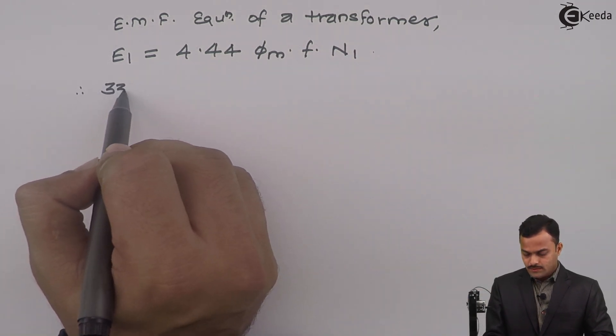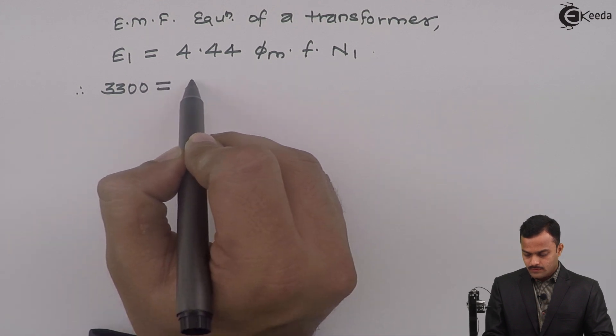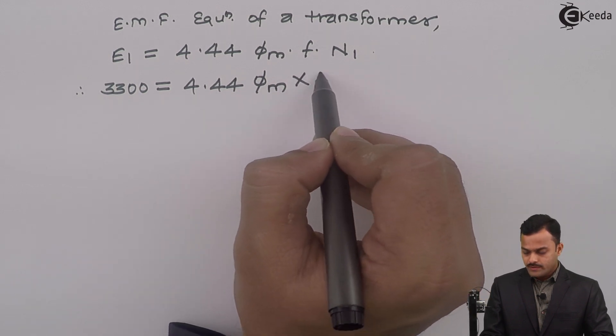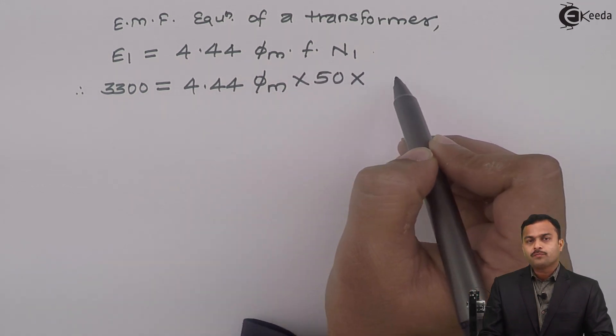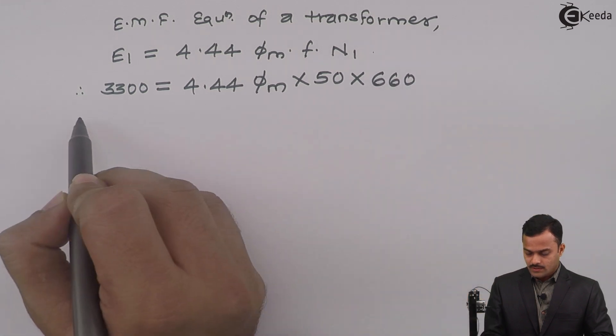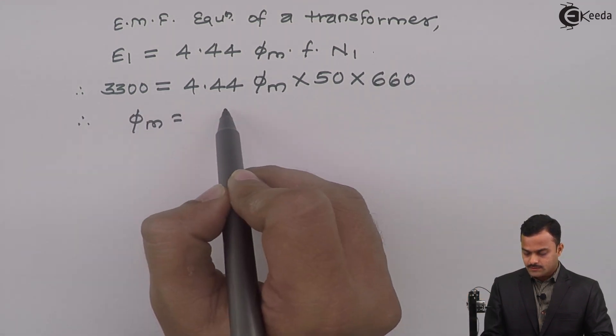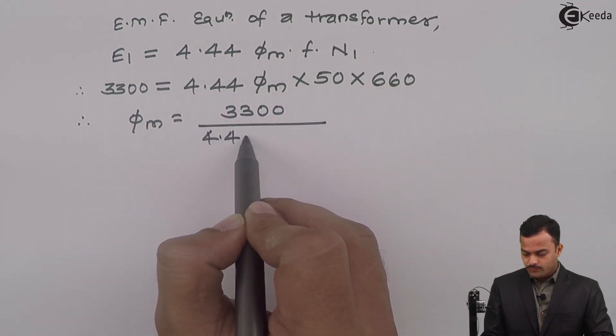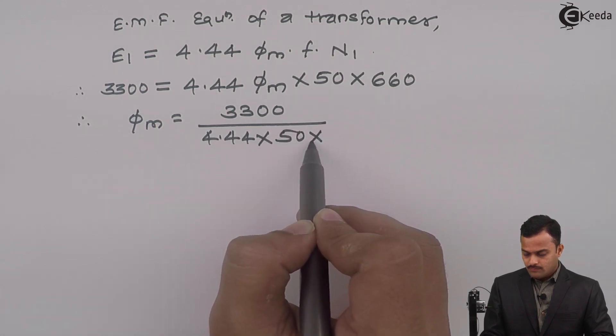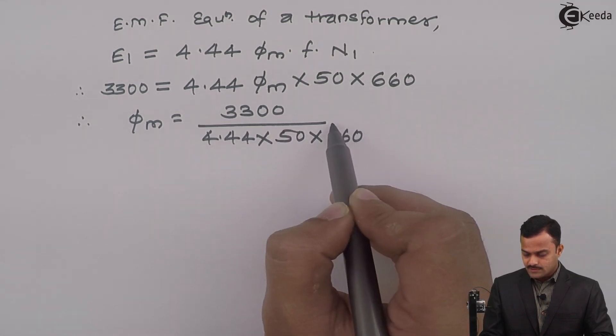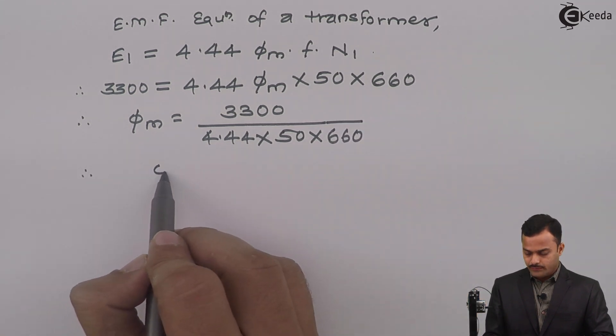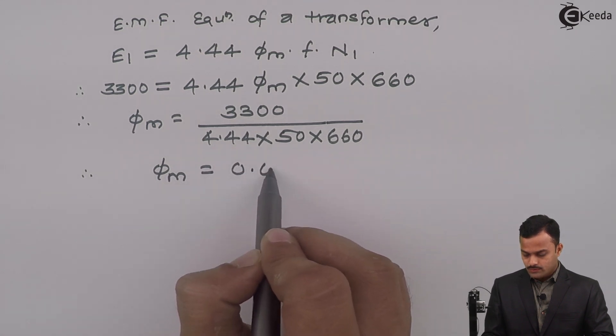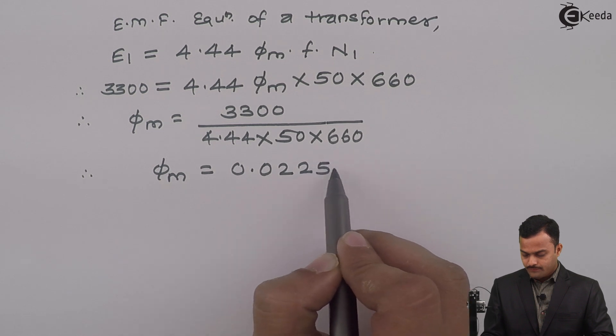So it says E1 equal to 4.44 phi M into F into N1. E1 is 3300 equal to 4.44, phi M is the maximum flux in the core that is unknown, frequency is 50, number of primary turns are 660. So phi M can be calculated 3300 divided by 4.44 multiplied by 50 multiplied by 660. So solution of this equation will give you maximum flux in the core phi M equal to 0.0225 Weber.